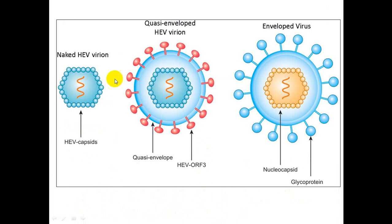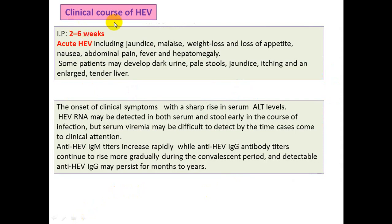There are three variants of hepatitis E virus: naked (non-enveloped), enveloped, and quasi-enveloped hepatitis E virus. The clinical features: hepatitis E virus has an incubation period of two to six weeks. It mainly causes only acute infection — there is no carrier state or chronic form, similar to hepatitis A virus and unlike hepatitis B and C.